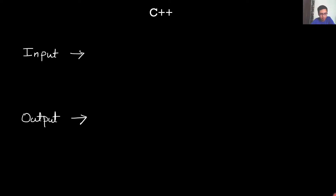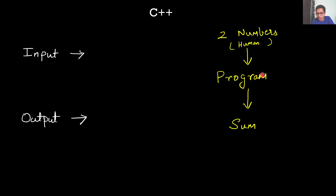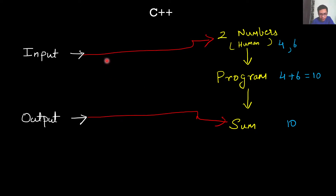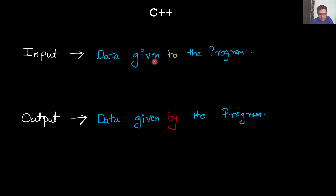Before we move on to the programming part, let's understand what input and output are. Let's say we have a program, and two numbers are given to it by a human. The program will calculate the sum of these two numbers and then print the result. For example, if four and six are given, the program prints ten. So the input is the two numbers given to the program, and the output is the sum given by the program. The data given to the program is called input, and the data given by the program is called output.